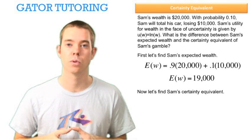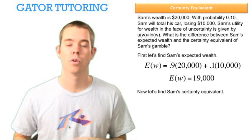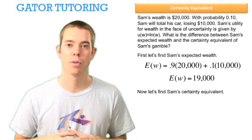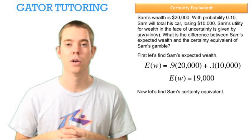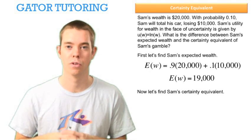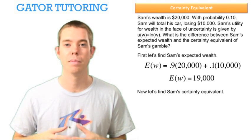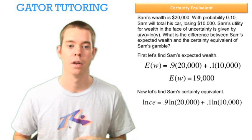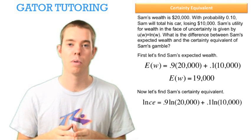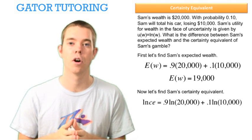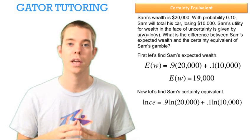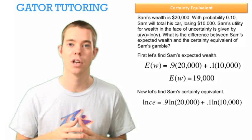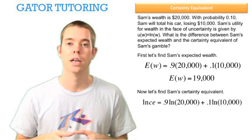Now let's find the certainty equivalent of Sam's gamble. The certainty equivalent, remember, is the single amount of wealth we'd be happy to accept in order to avoid all risk — the amount we'd be willing to trade our gamble for. When we talk about what we'd be willing to do, we need to bring in our utility function. So the ln of the certainty equivalent — because our utility here is the ln of W — is equal to...